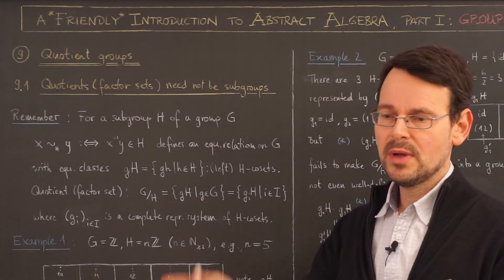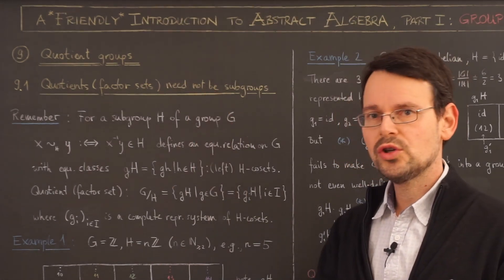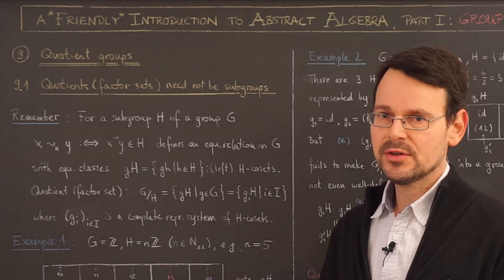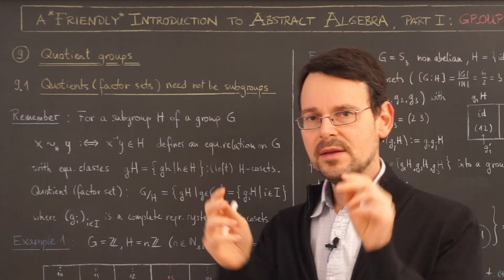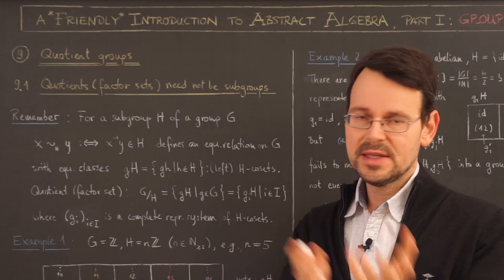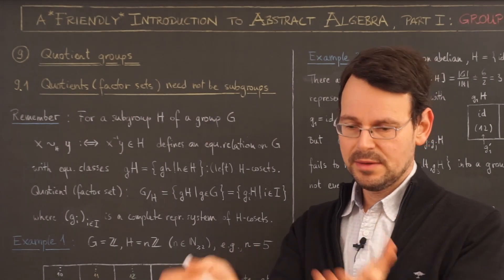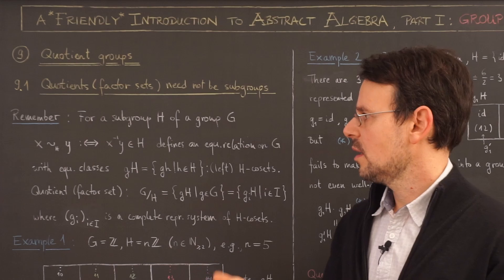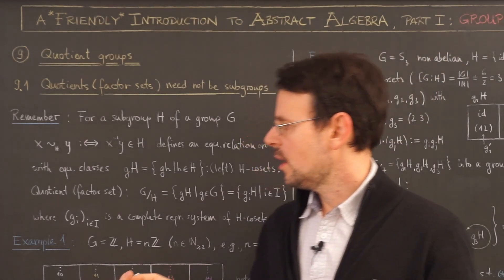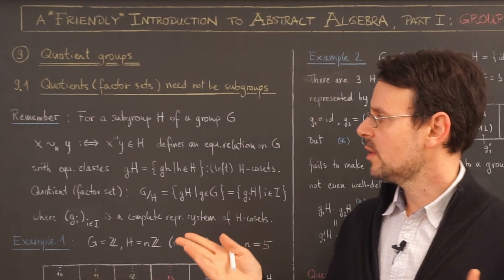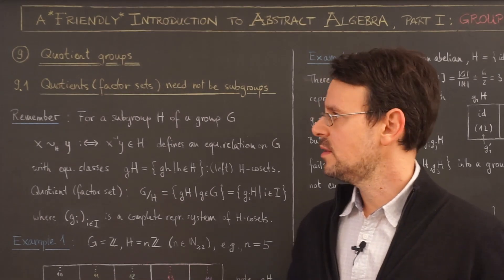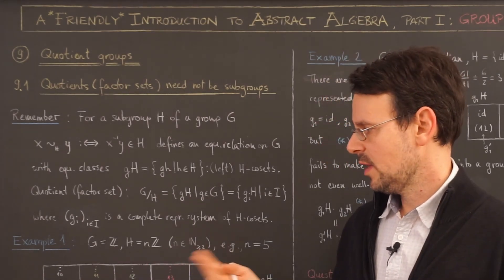in our case a subgroup of a group, and taking the quotient by this substructure. And if we are lucky this quotient has the same algebraic structure as the thing we started with, in this case a group. And I hope it will become clear in the next two lessons why this is important and how that actually works.